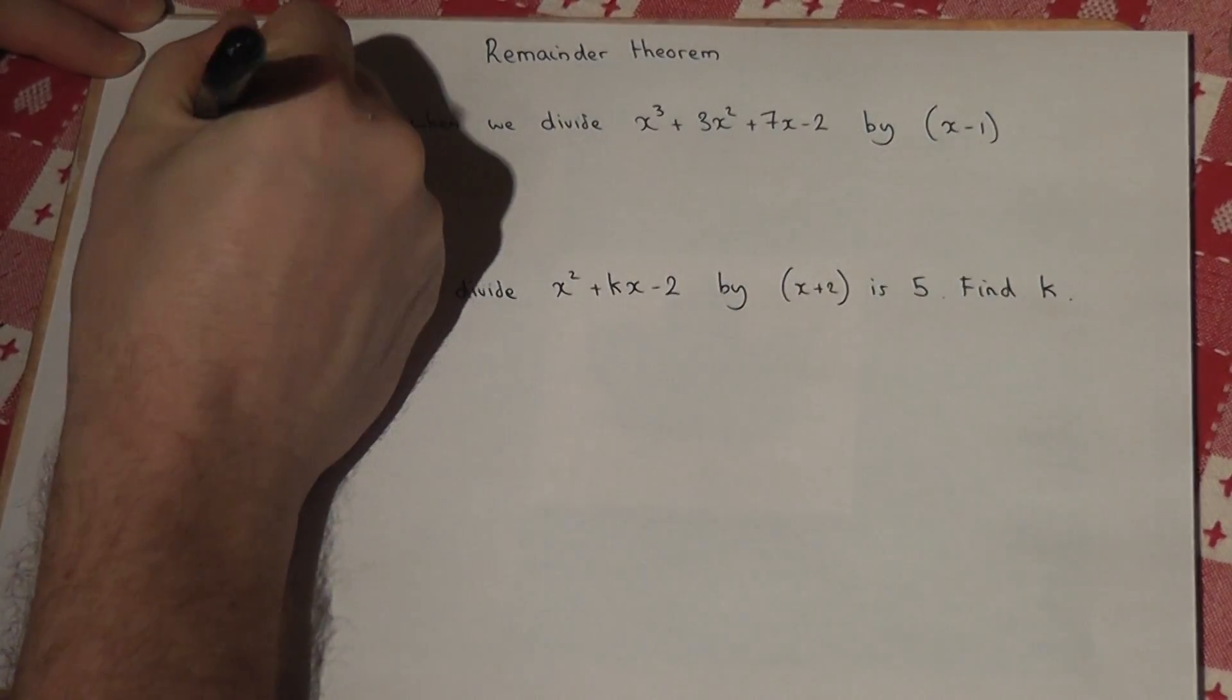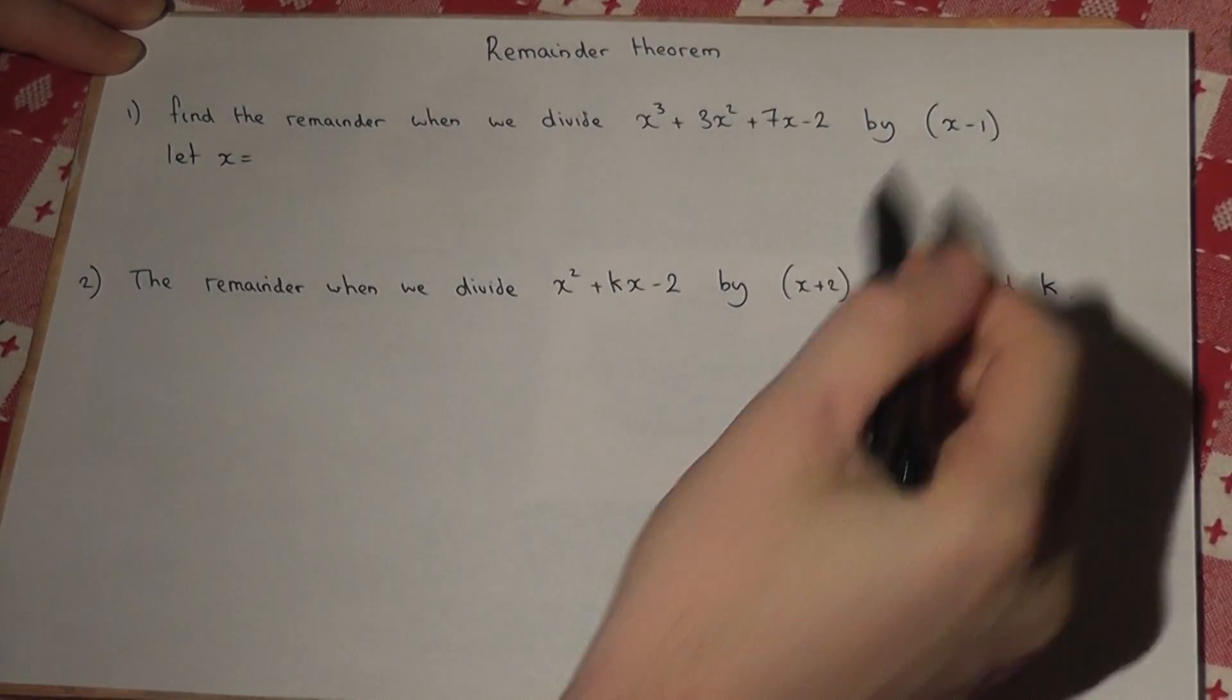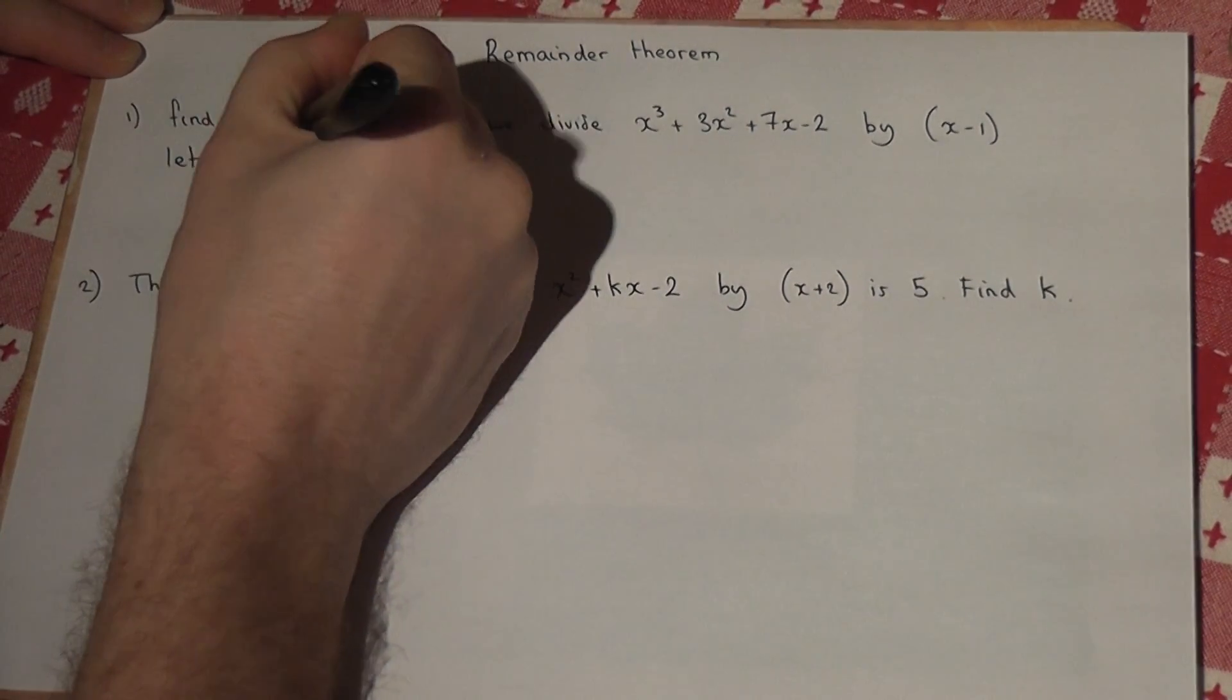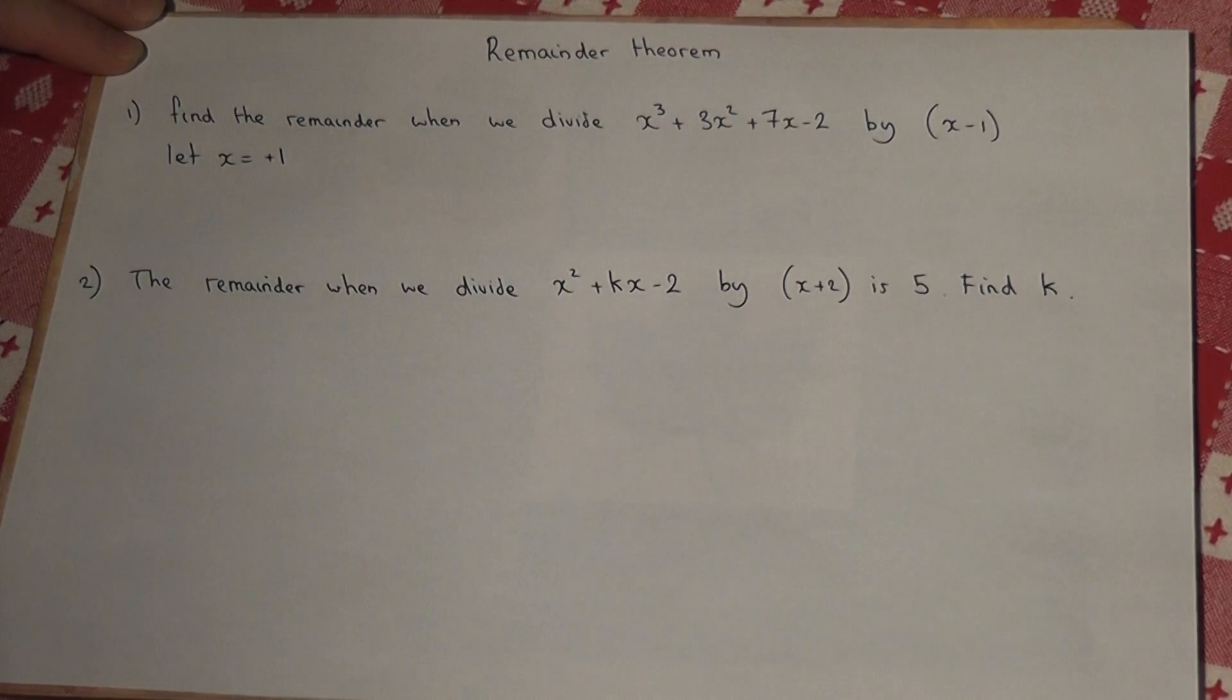We let x equal the number in the bracket with the sign changed, so x plus 1. And we put this value into the function.